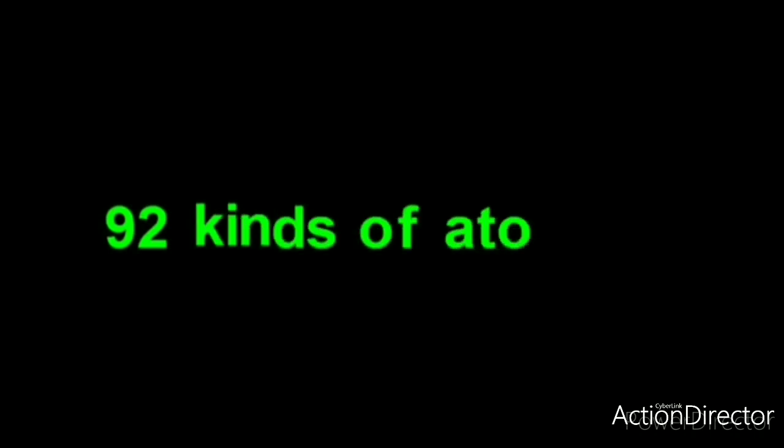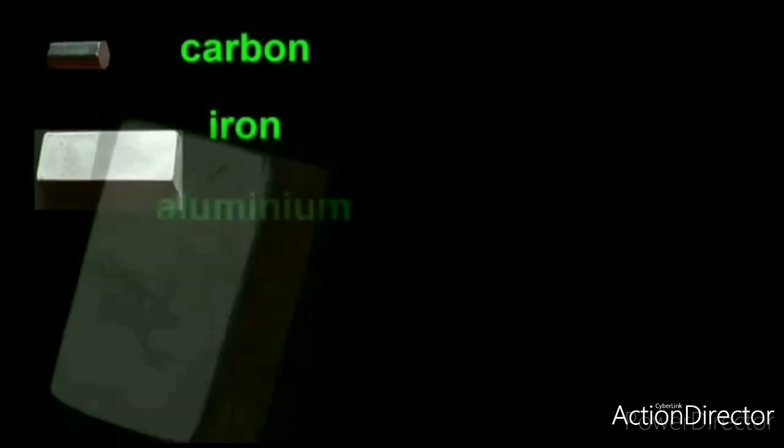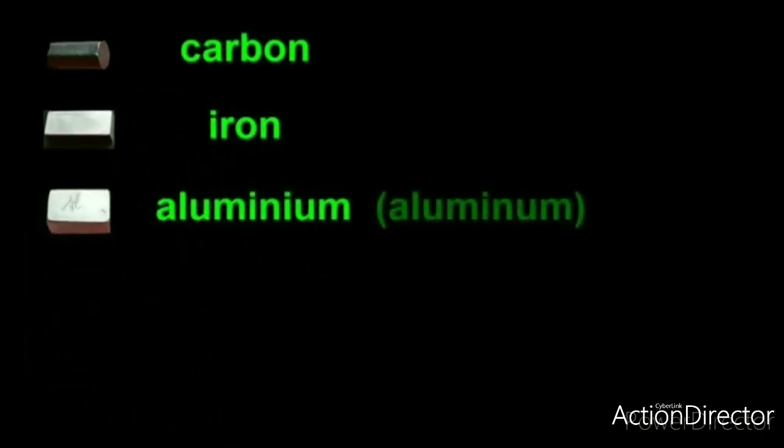Similarly, if we zoom up a lump of silver, it also contains only silver atoms in it, so it is also an element. Because there are 92 kinds of atoms, there are also 92 kinds of elements. You have probably heard about some elements like carbon, iron, aluminium, and so on.